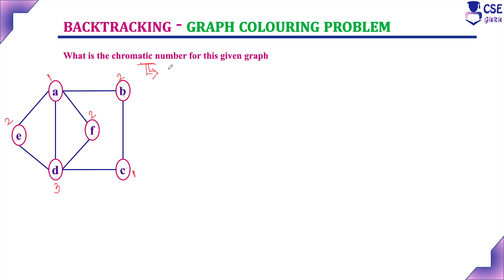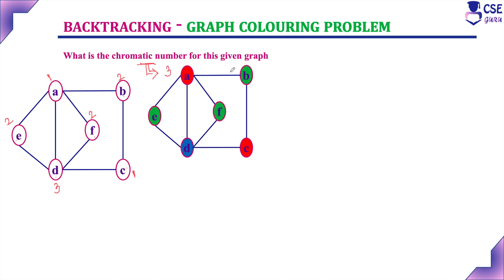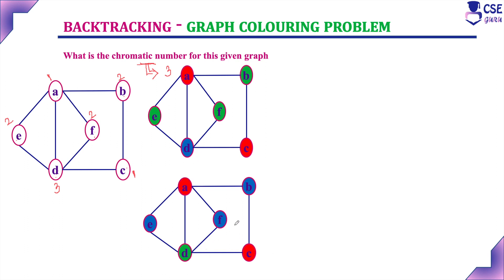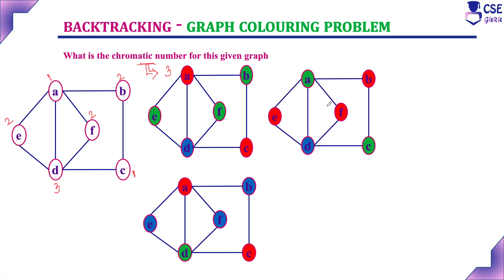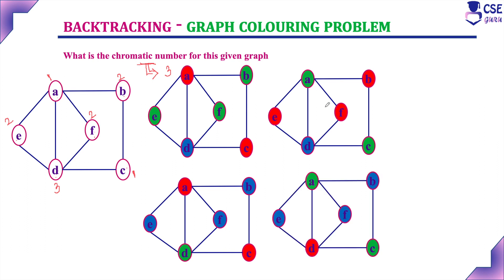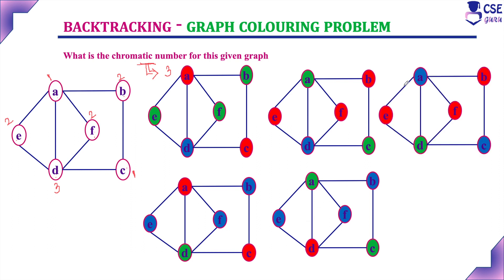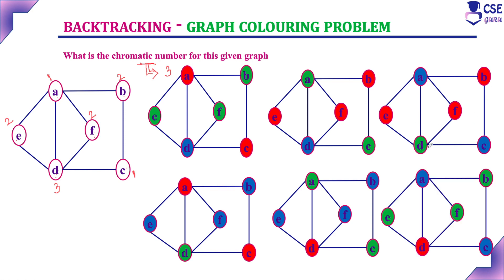The minimum number of colors required to color this given graph is 3. Possible solutions: A and C with red, E and F with green, D with blue. Next: A, C with red, E, B, F with blue, D with green. Next: A, C with green, E, F, B with red, D with blue. Next: A, C with green, E, F, B with blue, D with red. Next: A, C with blue, E, F, B with red, D with green. Next: A, C with blue, E, F, B with green, D with red. One more possibility — if color number 2 is assigned to B and D, since B and D are not adjacent, and color number 3 to E and F, that is also possible. With this concept, you will get a few more solutions.